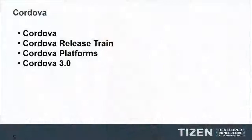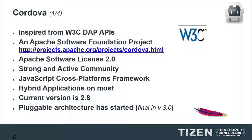So, Cordova. Cordova was inspired from the W3C DAP API, which is about providing Web APIs to grant HTML5 applications the ability to interface with device features — sensors like accelerometer and geolocation, but also calendaring and contacts. Cordova is an Apache Software Foundation project, so it is an open source project following the Apache Software Foundation 2.0 licensing, and it is a JavaScript cross-platform framework.